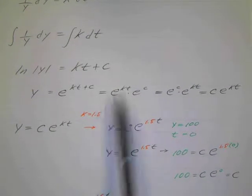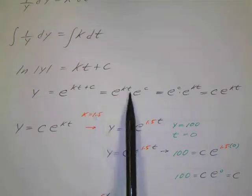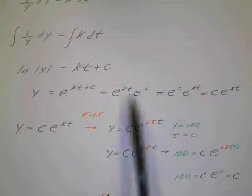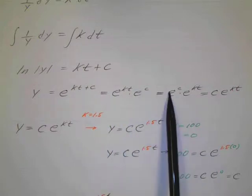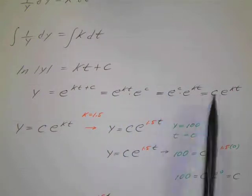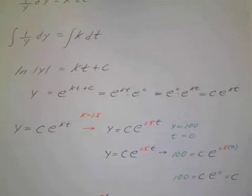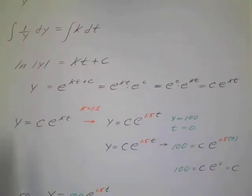Then I can break this up from a sum to the product, e to the kt times e to the c. But e to the c, I can put that in front, and e to the c is just another constant c. So there's my constant. So I have y equals